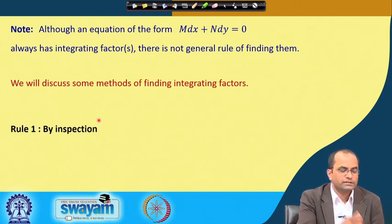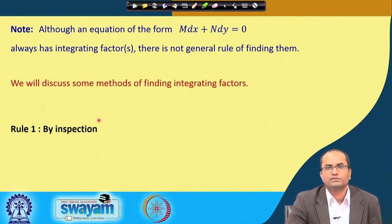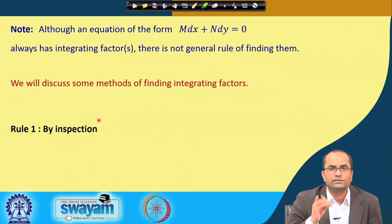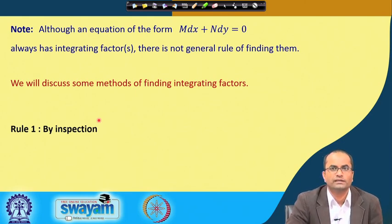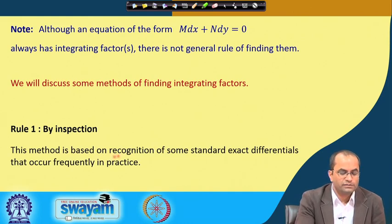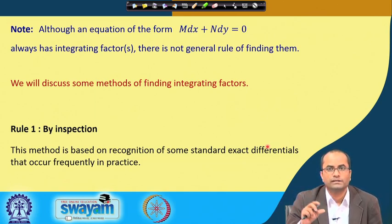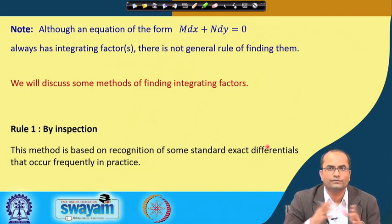Rule number one is by inspection. This is the most straightforward but also the most difficult approach, because it is essentially a guess — looking at the differential equation and recognizing that multiplying by a certain function makes it exact. This method is based on the recognition of some standard exact differentials: if we know standard differentials, we can look at the equation and recognize what to multiply or divide by to obtain those standard forms.